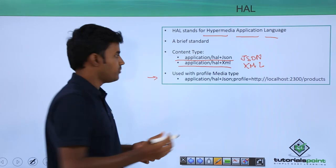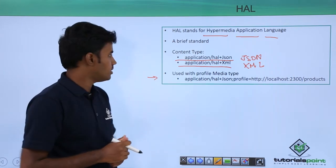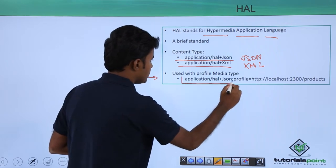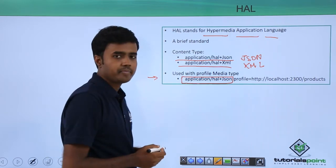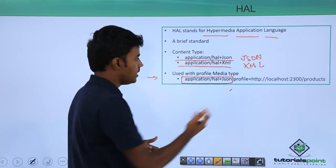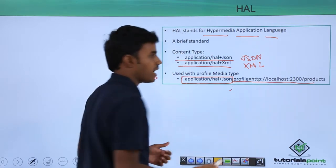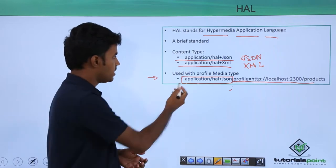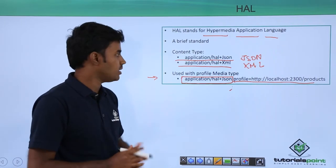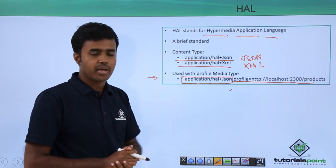More frequently, it has been used with profile media types, where the first part refers to your content type and then you say a semicolon and then just say profile is slash products. Basically this gives the information of both the content type that the data is coming and the media type as well.